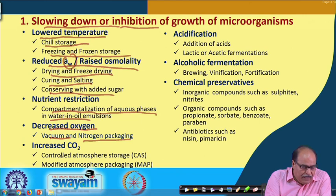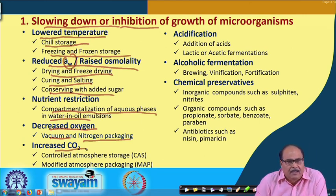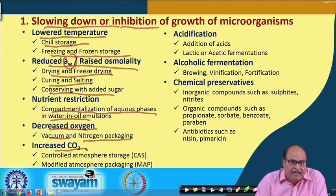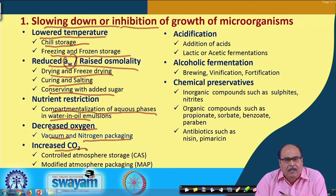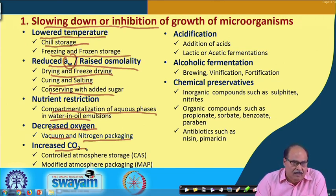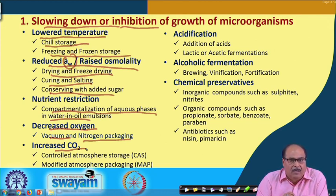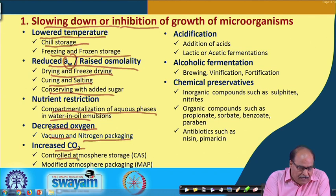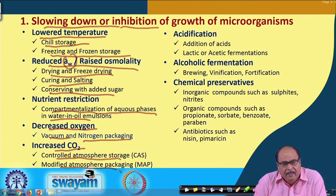Controlling the gaseous composition — increasing the level of carbon dioxide and lowering the level of oxygen — significantly influences the respiration rate of microorganisms. This forms the basis of two major processes: controlled atmosphere storage and modified atmosphere packaging.